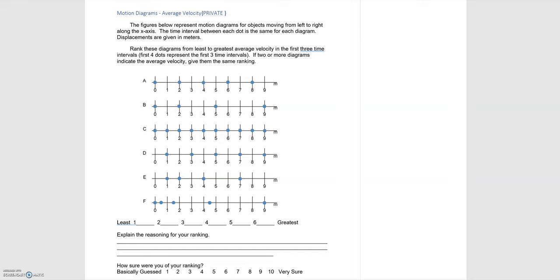In this video we'll be doing another ranking example for average velocity. Let's start off by reminding ourselves what average velocity is. Average velocity is equal to the displacement or the change in position over the change in time.